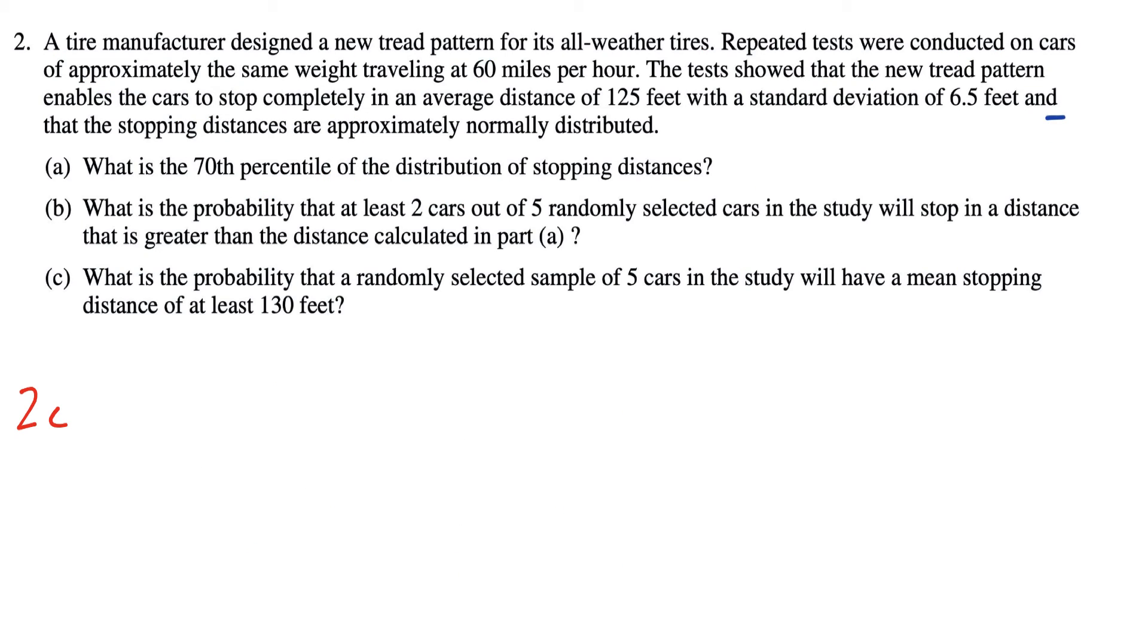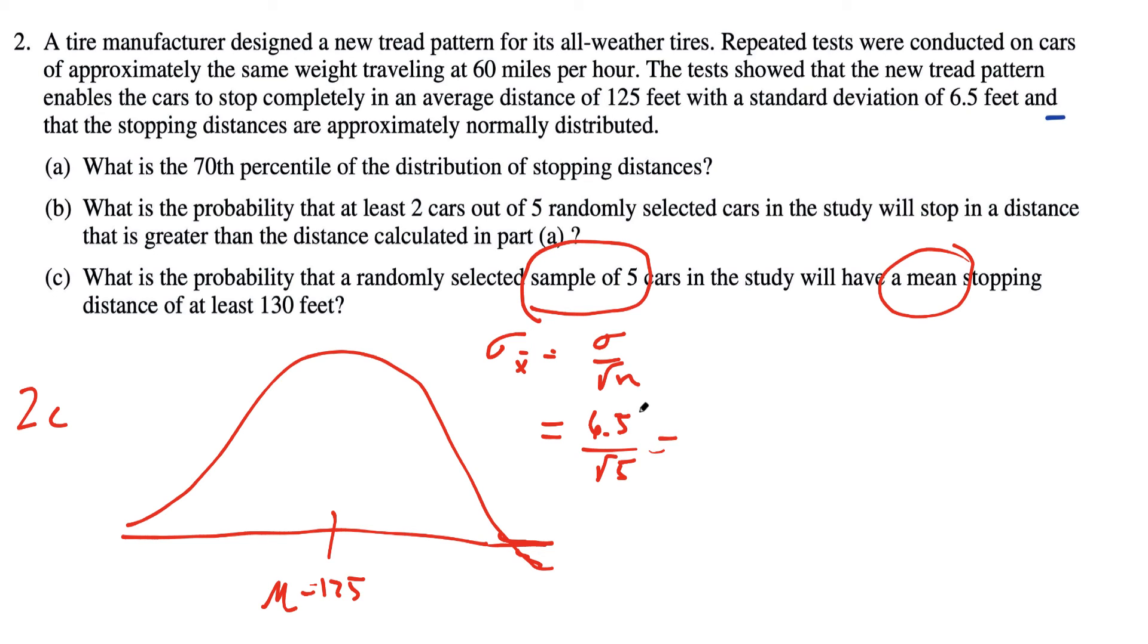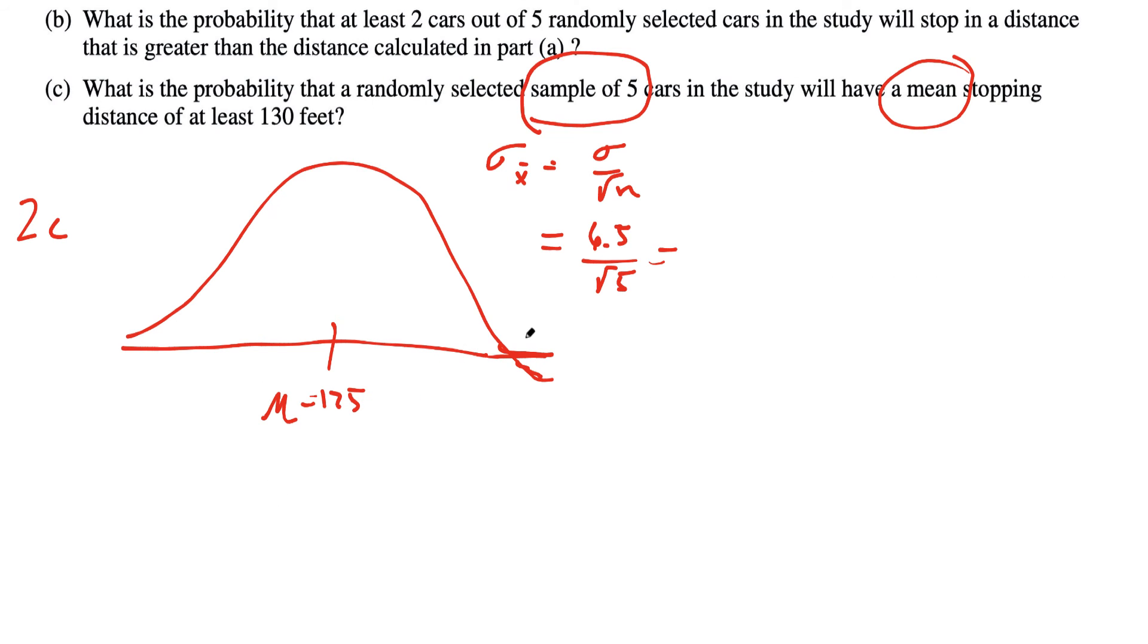Okay. So for part 2C, what is the probability that a randomly selected sample of five? So we're talking about a sampling distribution for means. So we know that we're going to have to change our standard deviation here for our sampling distribution. So mu will still equal 125. By the way, that should not go below that point. Sorry about that. So the standard deviation of X bar should equal its sigma over the square root of N, which in this case would be 6.5 over the square root of five, which is approximately 2.906. So let's call it 2.91. So 2.91. That is a standard deviation we use.